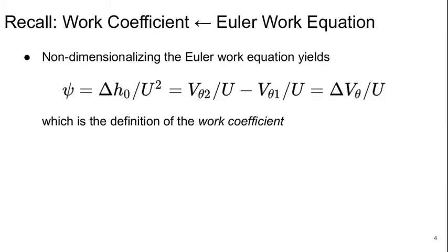It's a brief reminder of a couple of things we introduced at the end of the last lecture. We introduced the work coefficient, which came from non-dimensionalizing the lower work equation. And this is our work coefficient ψ, which is basically our change in tangential velocity divided by our mean blade speed.